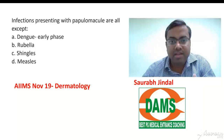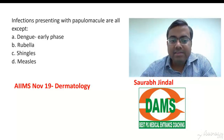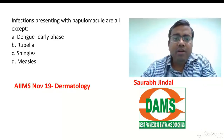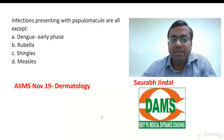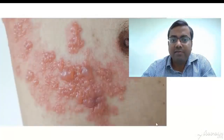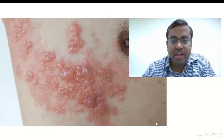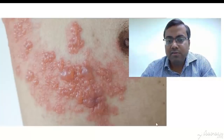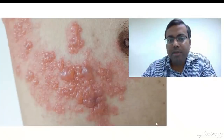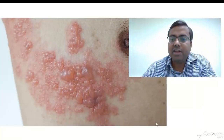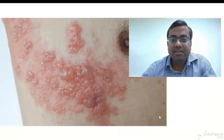Shingles is the other name for herpes zoster. Shingles is typically a vesicular rash — a bullous and vesicular blistering rash occurring in a dermatomal fashion. It typically comes in people over 60 years of age or in those on immunosuppressive drugs.